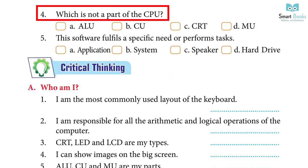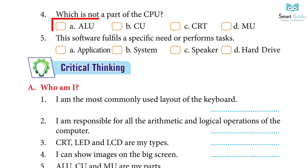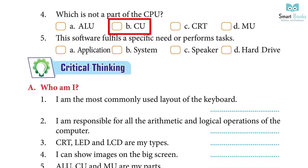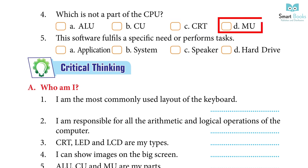4. Which is not a part of the CPU? A. ALU, B. CU, C. CRT, D. MU. Answer: C. CRT.